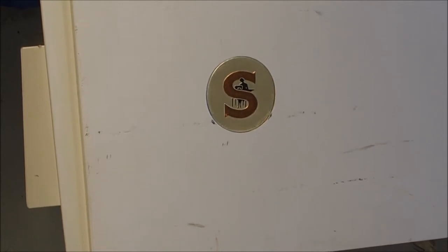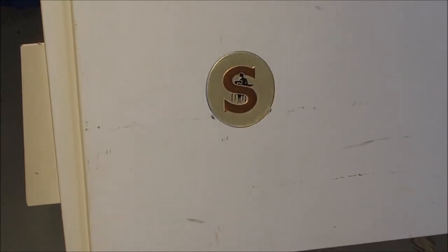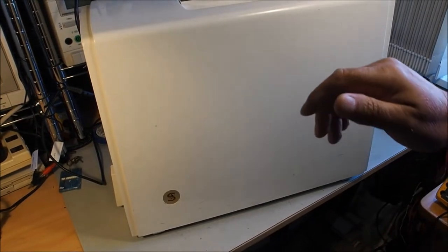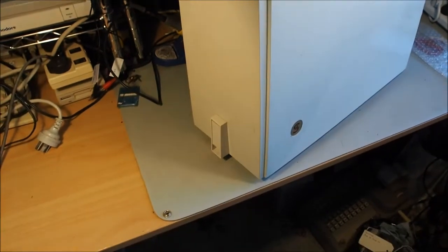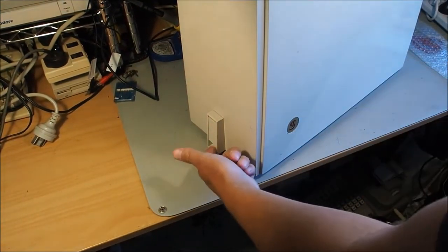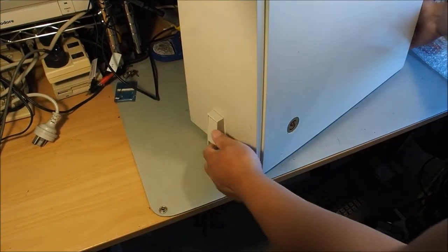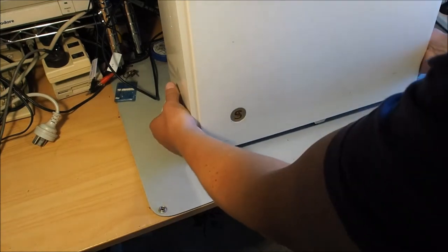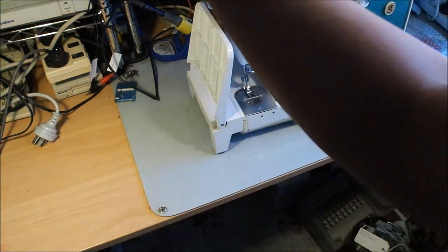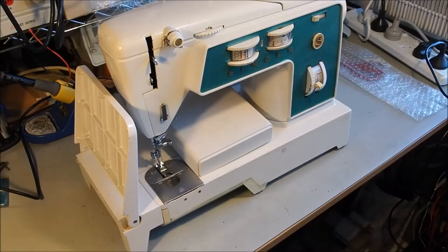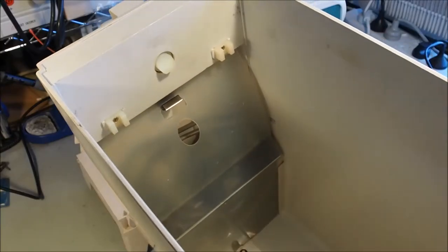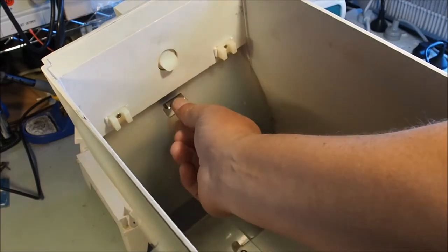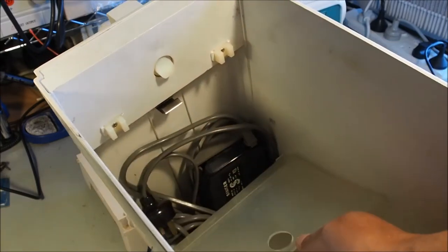There's a close-up of the Singer logo on the front of the case. The case is latched with these latches on the side - just pull the latch out on both sides and lift. Inside the case, there's a compartment for the foot controller and cable.